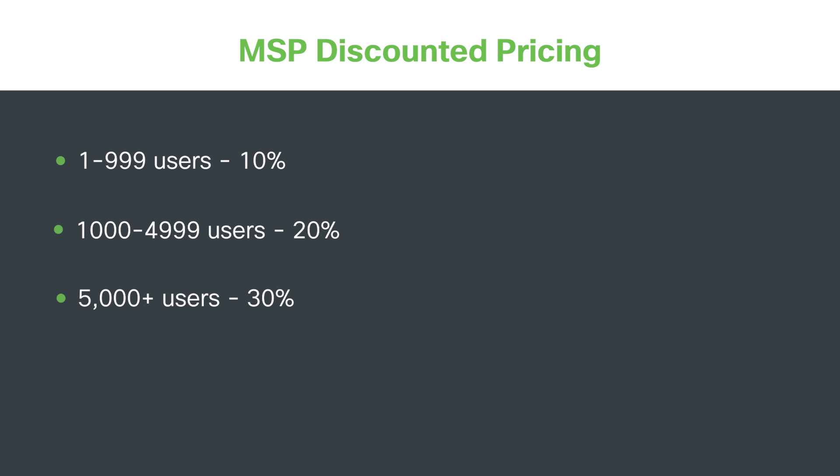As an MSP partner, you will receive an initial 10% discount starting with user number one. Once you have 1000 users or more in aggregate across your clients, you will receive a 20% discount across your entire bill. By structuring the buying program this way, we remove the need for quotes, orders, license packs, renewals, and co-terms. Licenses are auto-provisioned to users as they are created within your admin panel, so you simply pay for exactly what is in your admin panel as you roll out to your clients.